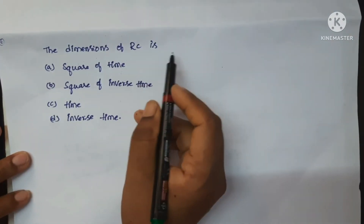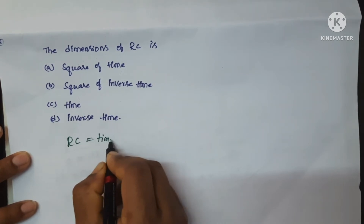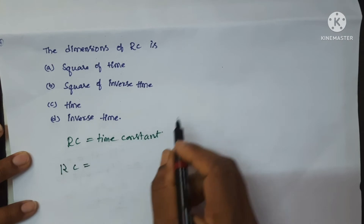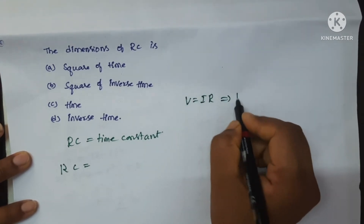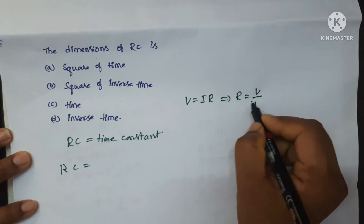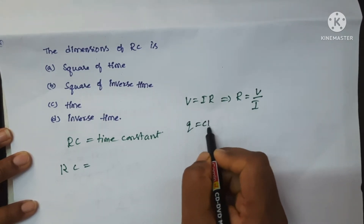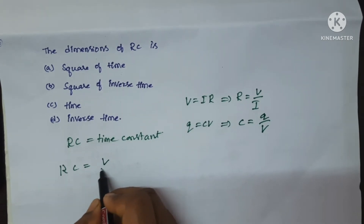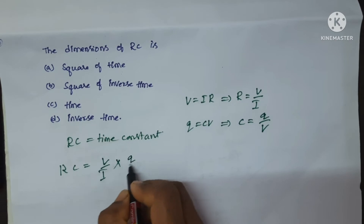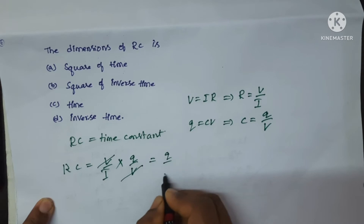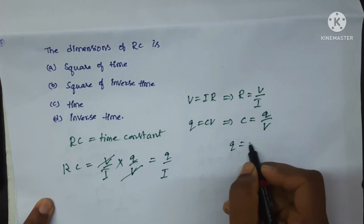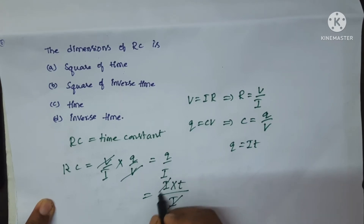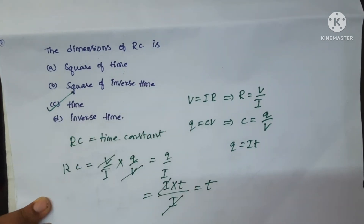Dimensions of R C: R C is nothing but the time constant, where R is resistance and C is capacitance. We know V equals I R, so R equals V upon I. Also Q equals C V, so C equals Q upon V. Substituting: R C equals V upon I multiplied by Q upon V. V and V cancel, giving Q upon I. We know Q equals I T, so substituting gives I T upon I — both cancel, which equals T, the time constant. So C is the correct option.